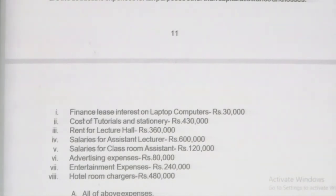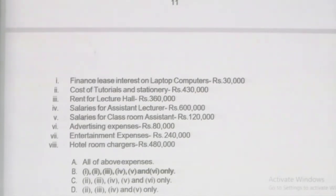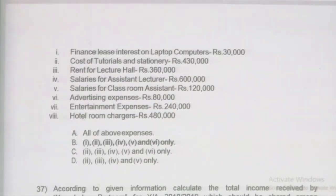Question 36: what are the deductible expenses for tax purposes other than capital allowances and losses? Finance lease interest is allowed; cost of tutorials is allowed; rent for lecture hall is allowed; salary for assistant lecturer is allowed; salary partner Mr. Fernando — salary partner can be allowed; salary for classroom assistant is allowed; advertising — no restriction under this act, so allowed. Entertainment is not allowed. Hotel room charges are considered domestic expenses and should not be allowed. Items 1 through 6 are allowed but items 7 and 8 are not. Answer B is the correct answer.